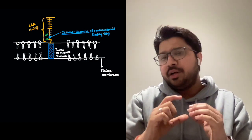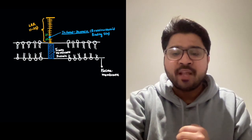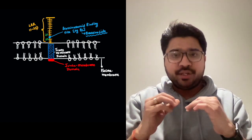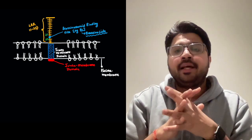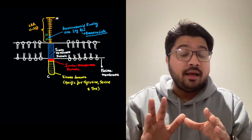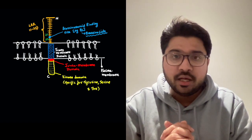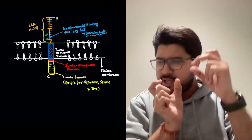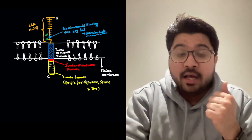Just below the LRR, shown in blue, is the transmembrane domain fitted within the plasma membrane lipid bilayer. Towards the inner side is the juxtamembrane domain, which connects the transmembrane domain to the cytosolic portion. The next domain is the kinase domain at the C-terminal, which has tyrosine, serine, and threonine kinase activities — another important exam question.